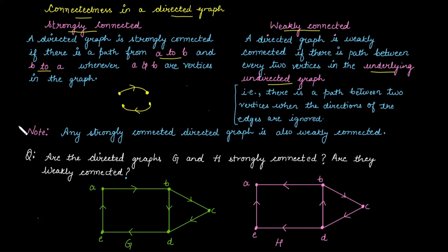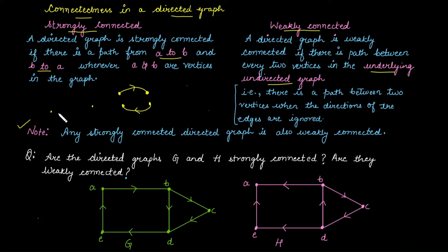Note that every strongly connected graph is also weakly connected. If the graph is strongly connected — meaning there is a path from vertex A to B and from B to A — then if you remove the direction from that graph, it will still be connected. So it is also a weakly connected graph.